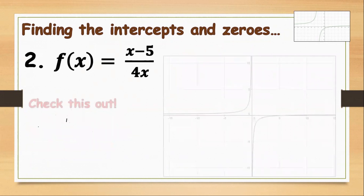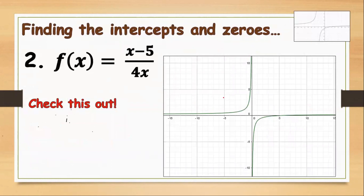Please check this out. This line of the graph does not meet the y-axis at any point. So it only touches the x-axis at (5, 0). This is your x-intercept.